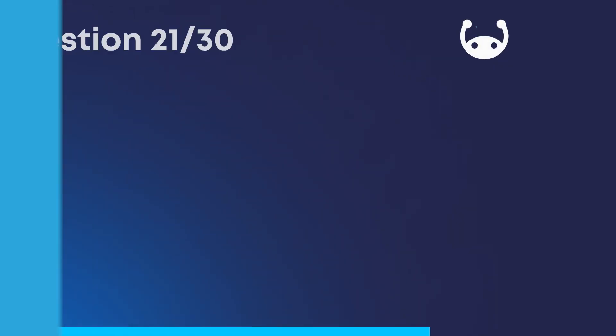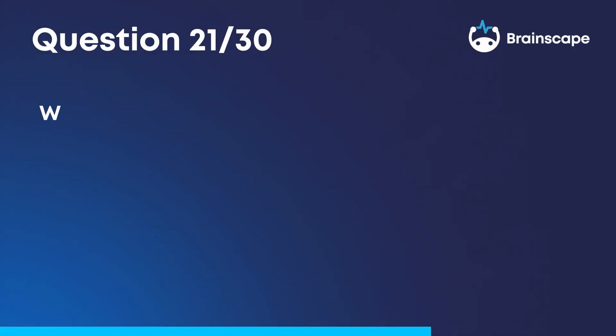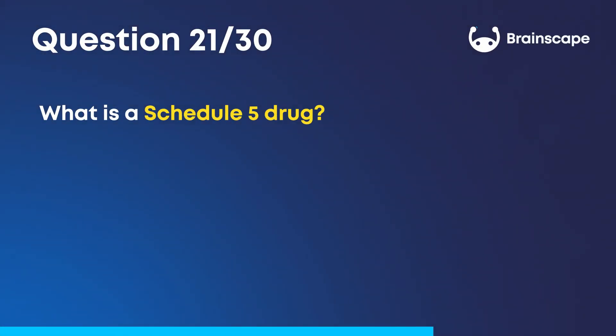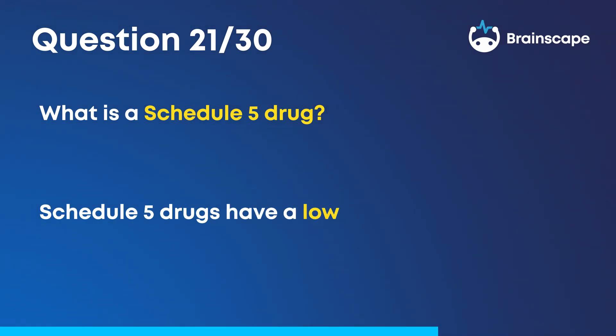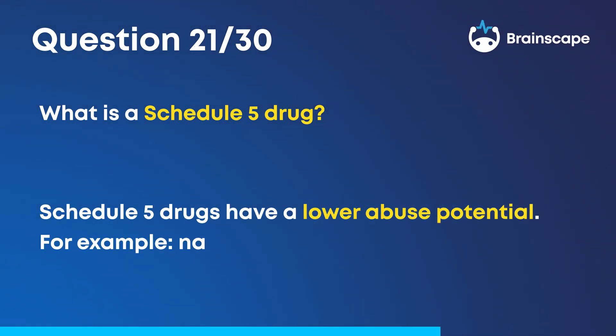Question 21. What is a Schedule V drug? Schedule V drugs have a lower abuse potential. For example, narcotic cough drops.